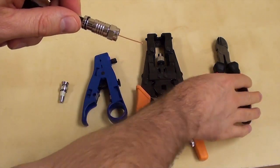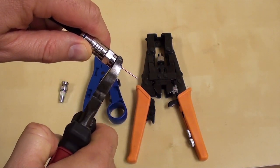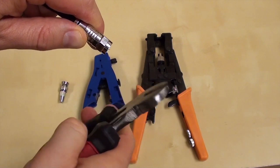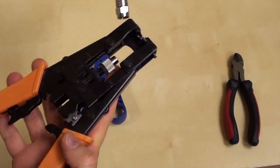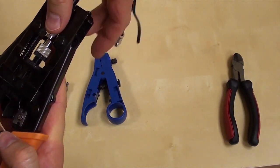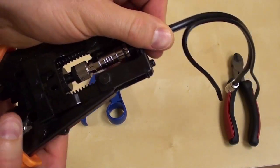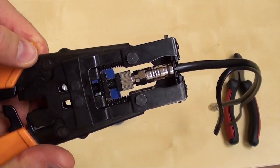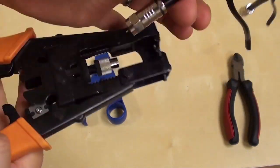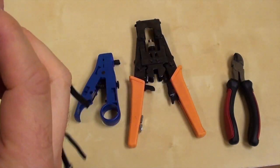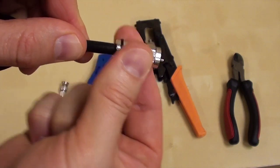Next, trim the exposed core so it is even with the end of the connector. Then grab the TL-33 compression tool. Seat the connector on the tool, making sure that the cable core goes into the hole of the compression tool. Then just squeeze the tool. The F connector is now firmly attached to the RG-59 cable.